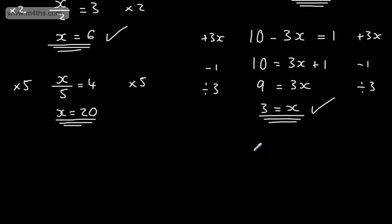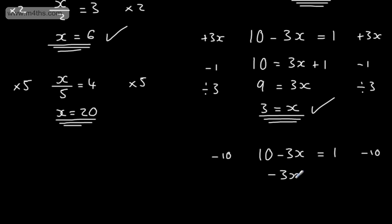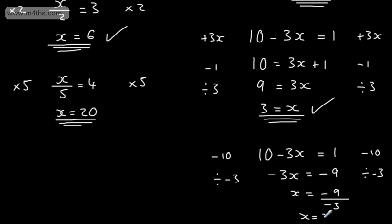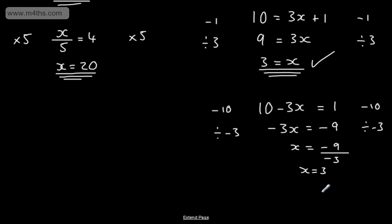I'll do this one again with a different approach. Depending on how confident you are with negative numbers, I could have subtracted 10 from both sides of the equation. That would have given me minus 3x is equal to 1 minus 10, which is minus 9. If I then divide both sides of the equation by minus 3, that gives us x is equal to minus 9 over minus 3, which gives us x equal to 3 — exactly the same result. Depending on how confident you are with negative numbers, that is also a valid approach.